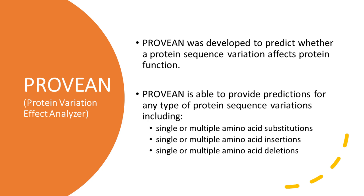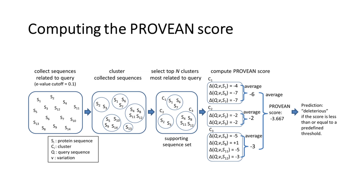To compute the PRUVIAN score, clustering of BLAST hits is performed by CD-HIT with a parameter of 75% global sequence identity. The top 30 clusters of closely related sequences form the supporting sequence set, which will be used to generate the prediction. A delta alignment score is computed for each supporting sequence.